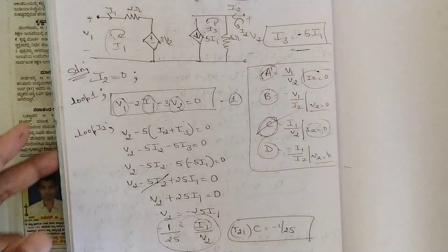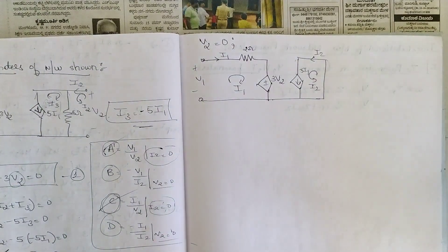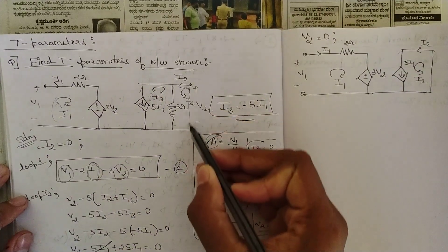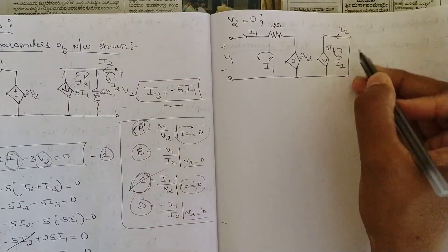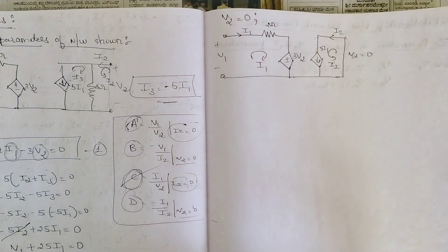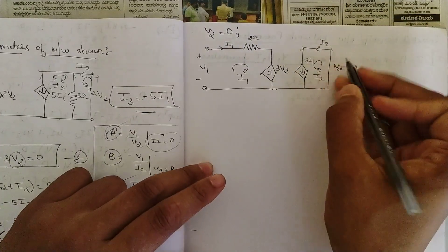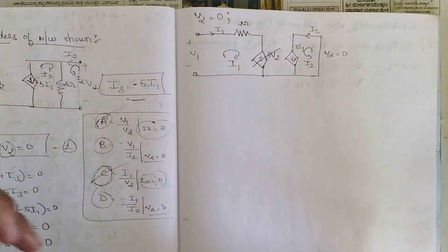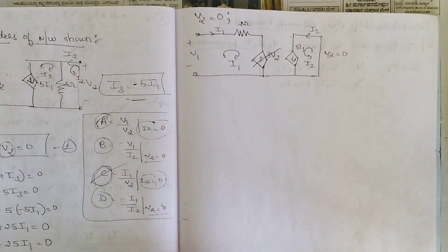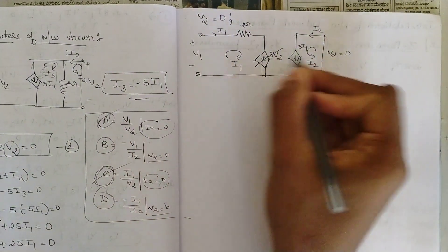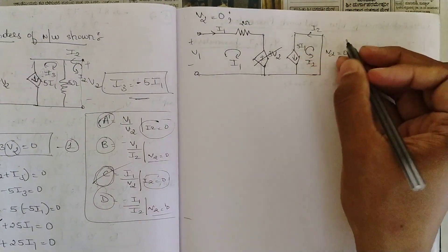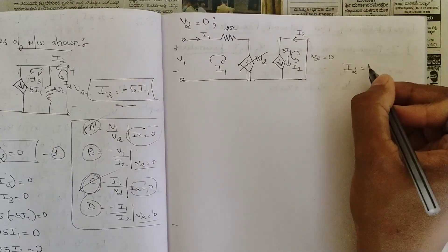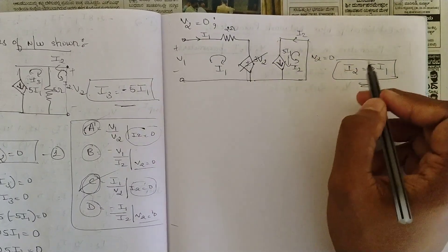Now apply the second condition: V2 = 0, and solve for B and D. With V2 = 0, I have reduced the circuit — those equivalent impedances go to zero and the output is short-circuited. In loop 2, since there is a dependent current source with the same direction as I2, we can directly write I2 = 5I1.